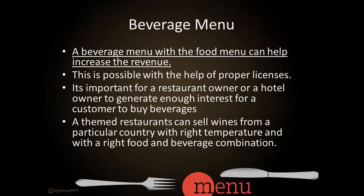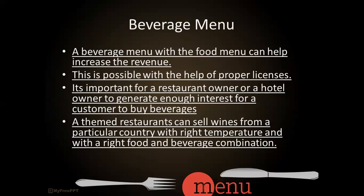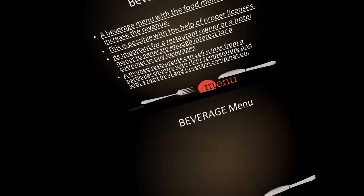A beverage menu combined with the food menu can help increase revenue. When alcoholic beverage service is happening, a liquor license is the primary requirement. It's important for a restaurant or hotel owner to generate enough interest for customers to buy beverages, since customers primarily come in for food. For example, a themed restaurant can sell wines from a particular country with the right temperature and food-and-beverage combination — if you are serving Italian food, you can offer Italian wines.